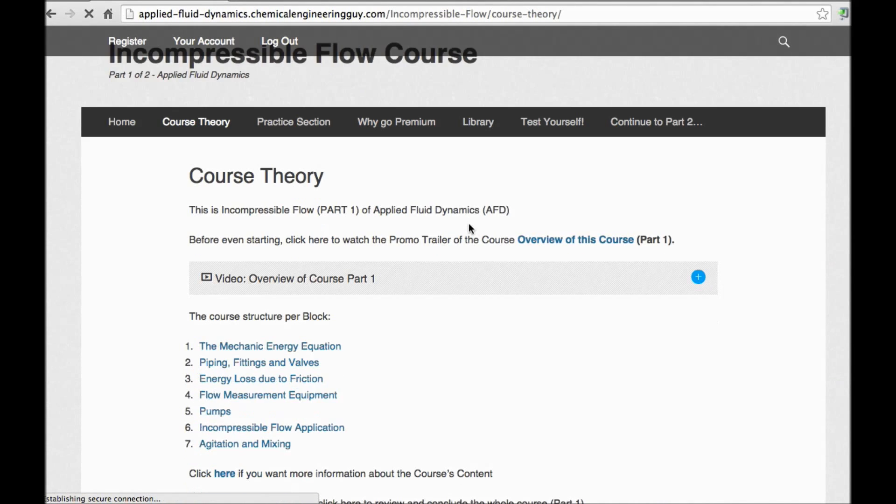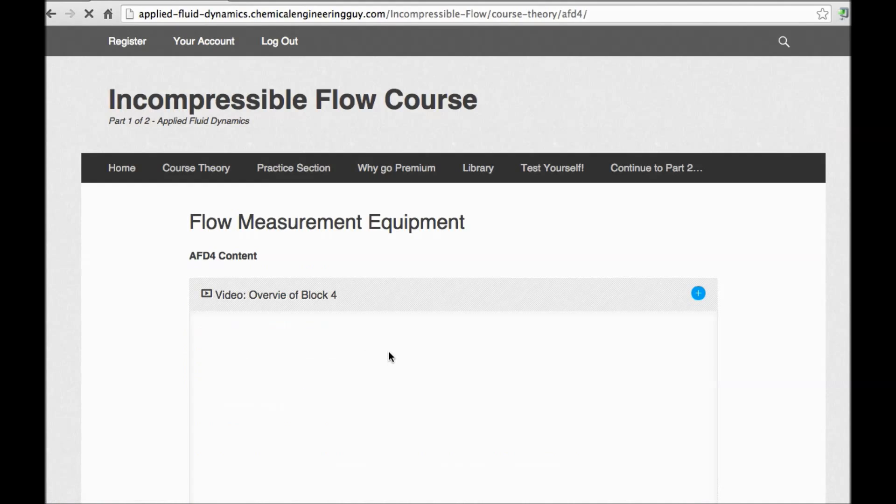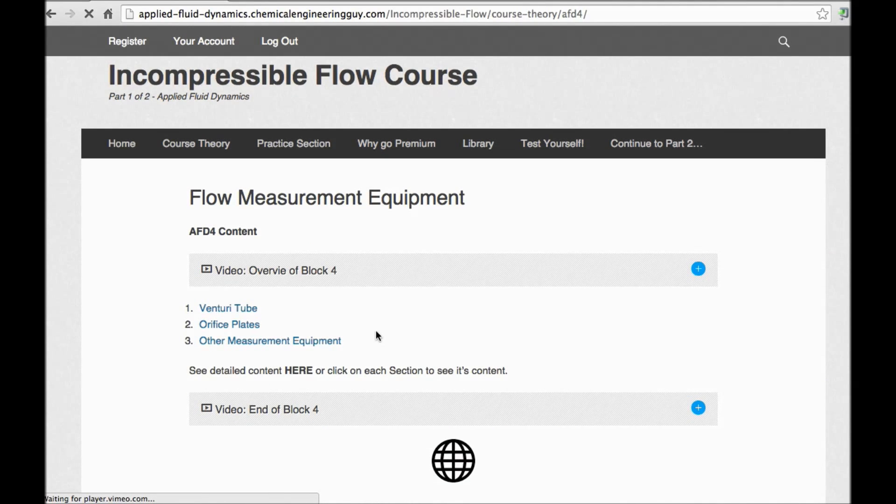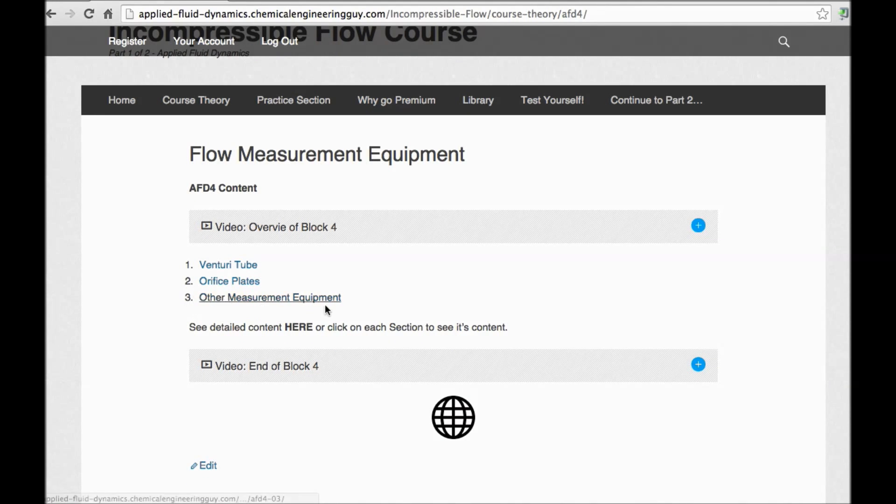You can always check out the course content here. For instance, if you want to check out how to measure some flow rate in piping, we've got block number four, which is called flow measurement equipment. We essentially have the venturi tube, the orifice plates, which have the same principle which is the Bernoulli equation, and learn about other measurement equipment.